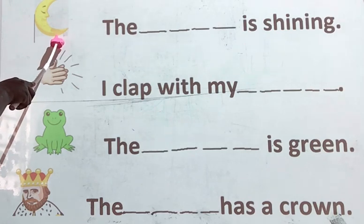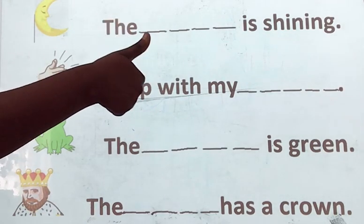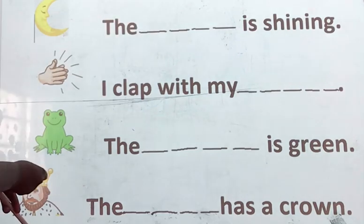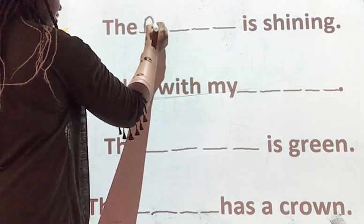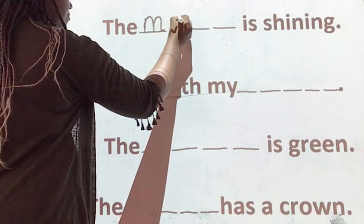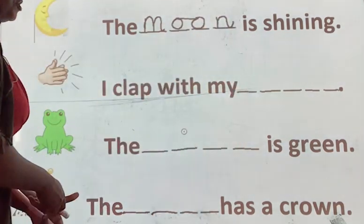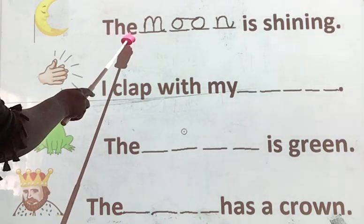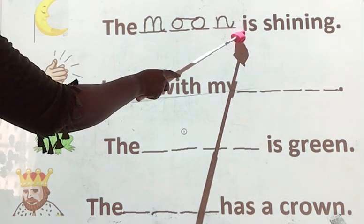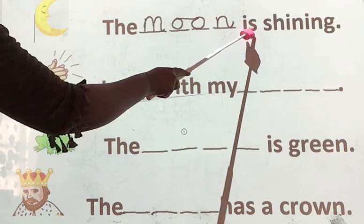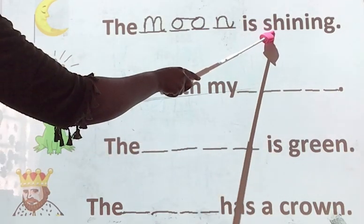What's this? Moon. Give me the sounds in moon. Let's write it — keep singing the sounds so you don't forget. The moon is a digraph.